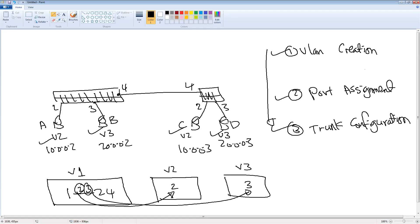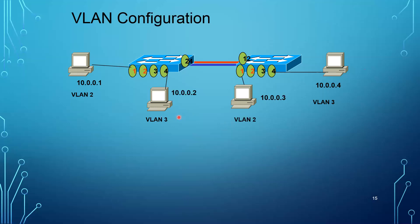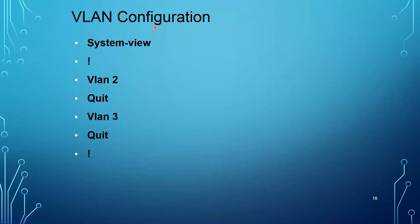Let's see how we do this in Huawei commands. For VLAN creation on the switch, first you log in and move to system view by typing 'system view'. Then configure VLAN 2, quit, VLAN 3, quit. Here we've created two VLANs — VLAN 2 and VLAN 3.